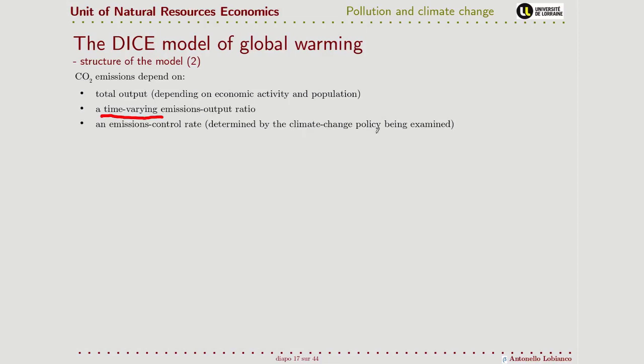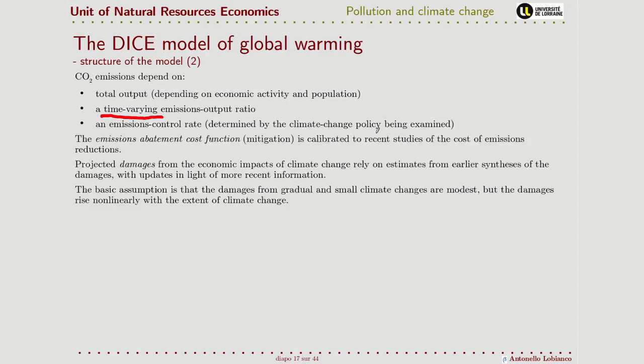There are two main functions calibrated from real data. One is the cost of the damage: estimations of how much CO2 entering the atmosphere and the consequent global warming create in terms of damage to society — both the damage to the production function and directly on the utility of people, as in the structure of our model. But there is also a function of how much abatement itself costs, because as we saw, mitigation also has a cost.